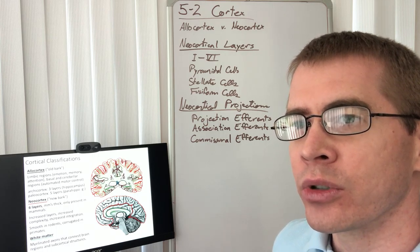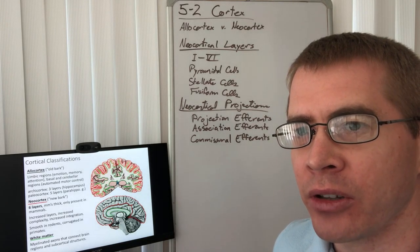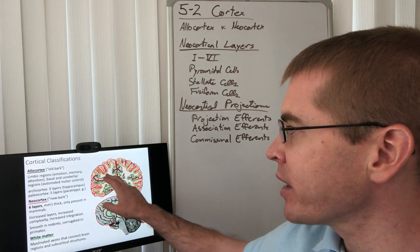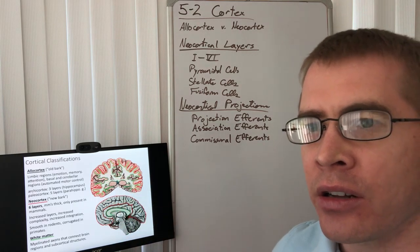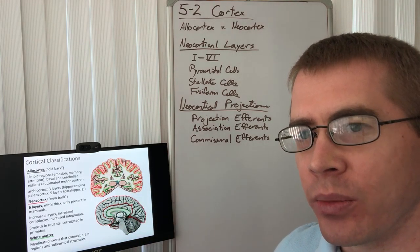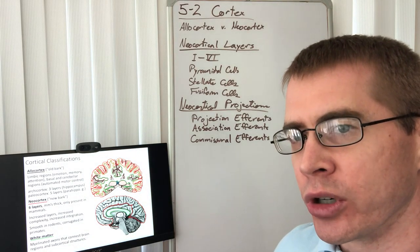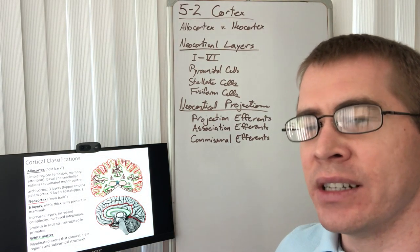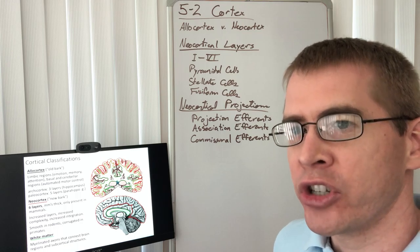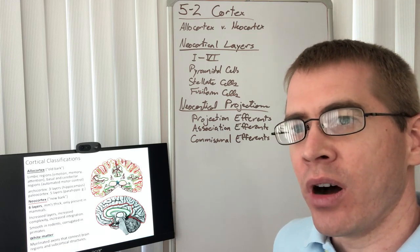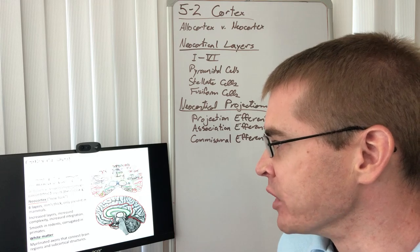We're also talking about white matter tracts when we talk about the cortex, because these white matter tracts — the corona radiata, the commissural fibers, the corpus callosum — are important for sending association information to other regions of the brain, to other cortical regions, and across the hemispheres.